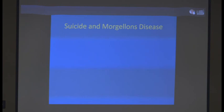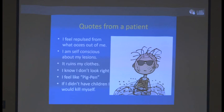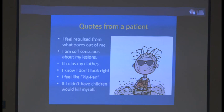Looking specifically at Morgellons disease: I asked a patient how suicidal they had been recently. This was someone very self-conscious of their appearance. They said: 'I feel repulsed by what oozes out of me. I am self-conscious about my lesions. It ruins my clothes. I don't look right. I feel like Pigpen from Charlie Brown.' They said, 'If I didn't have children, I would kill myself.' Children are one of the deterrents. Purpose, meaning, and social connection are significant deterrents even when someone has many severe symptoms.